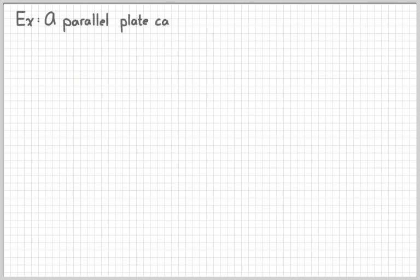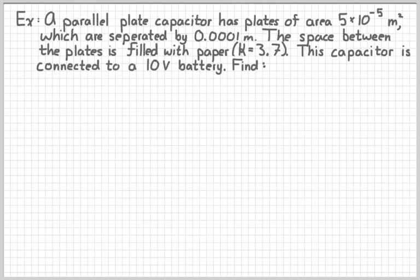So, let's look at a simple example. So, suppose we have a parallel plate capacitor and the plates have an area of 5 times 10 to the negative 5th square meters. So, that's normal size. That's something that would fit in your hand. And they're separated by 0.0001 meter. So, basically a tenth of a millimeter. And we fill the space in between the plates with a sheet of paper. It's about the thickness of a piece of paper. And then we connect it to a 10-volt battery.